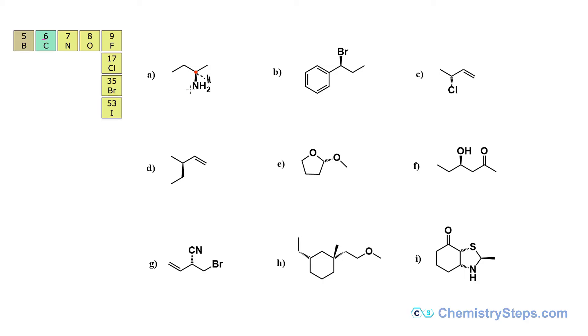And the priorities are going to go this way. Nitrogen will get number one because of the atomic number, number two, and number three, because here we have a carbon connected with another carbon. Here this is just CH3. And the arrow in this case is going clockwise and four is pointing away from us and so this will be R.